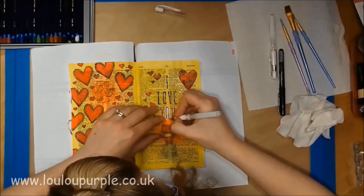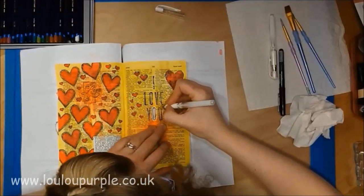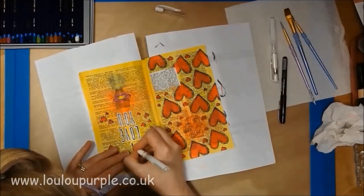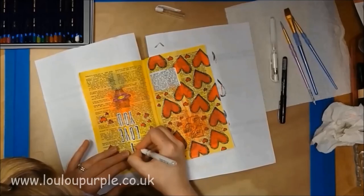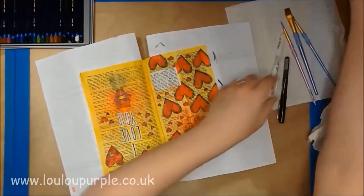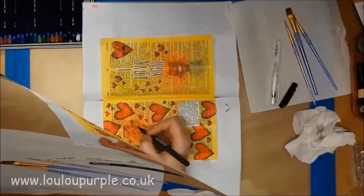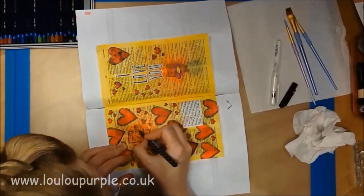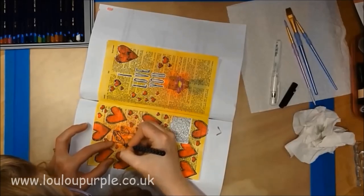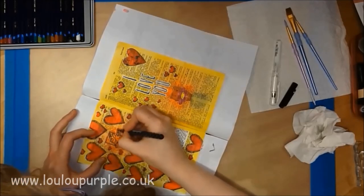I am now using my white Signo Uniball pen to make the letters pop and to go around the outline of the images to make them pop.